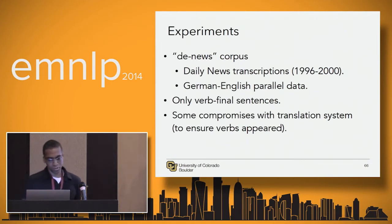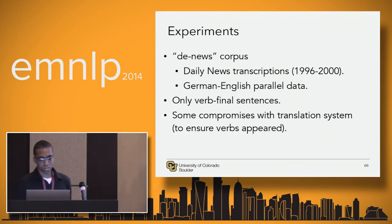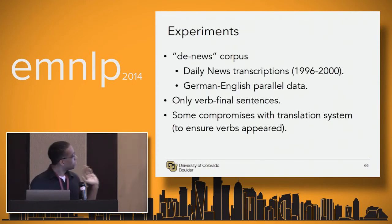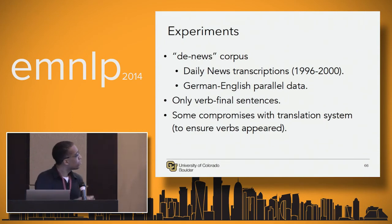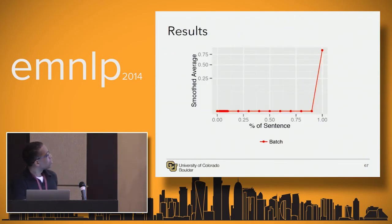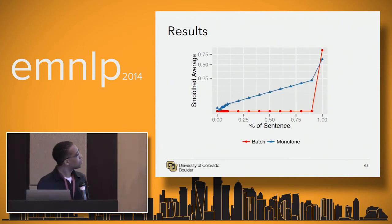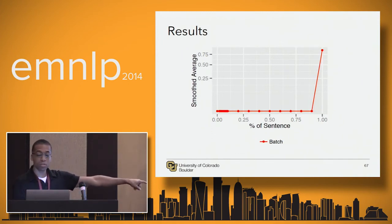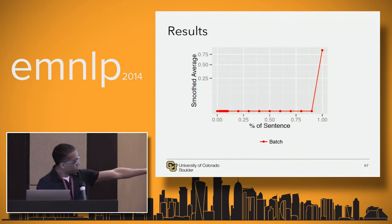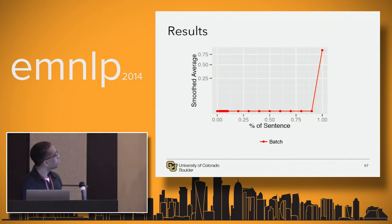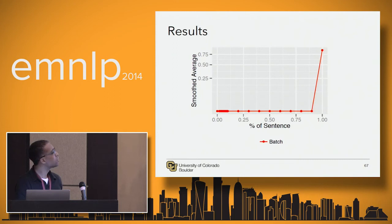For our experiments, we use the DE news corpus, which consists of daily news transcriptions, limited to only verb-final sentences in German. We did this to emphasize the verb predictive aspect. Now I'll show some results. This is our batch policy, which predictably only gets credit at the end. The x-axis is the percent of the sentence revealed, and the y-axis is the cumulative average of rewards as words come in.